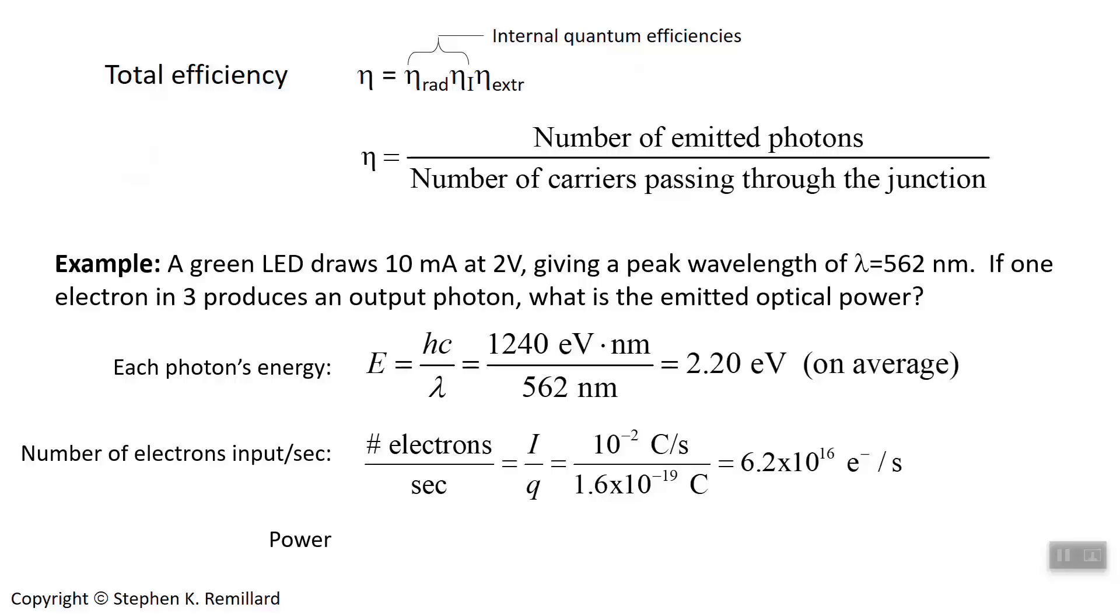Do you know the energy of each photon? 2.2 electron volts. We need watts. And so you have to do something with that 2.2 electron volts. You have to convert it to joules. So convert it to joules. That's the first step in this solution. 2.2 electron volts converted to joules.